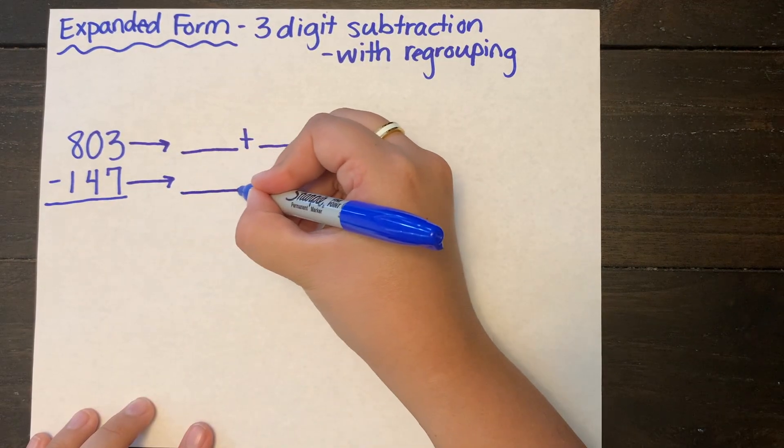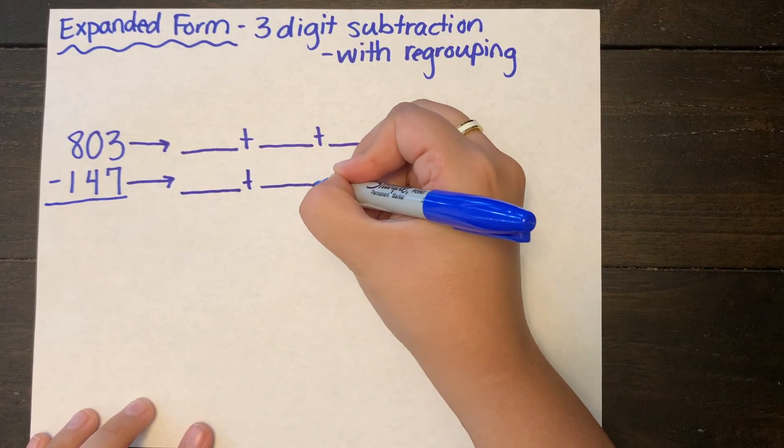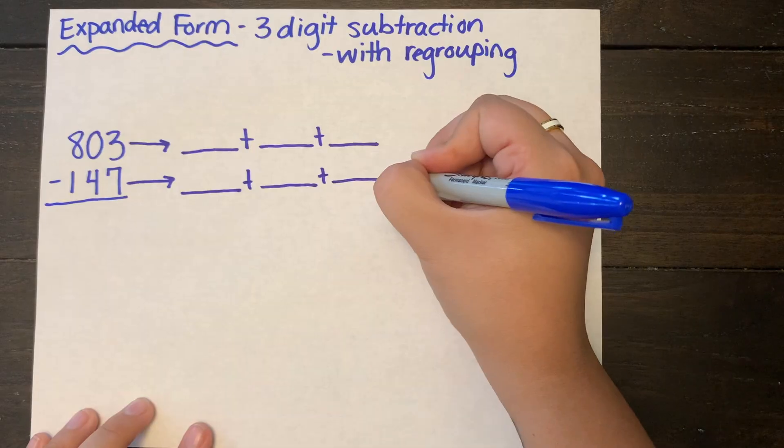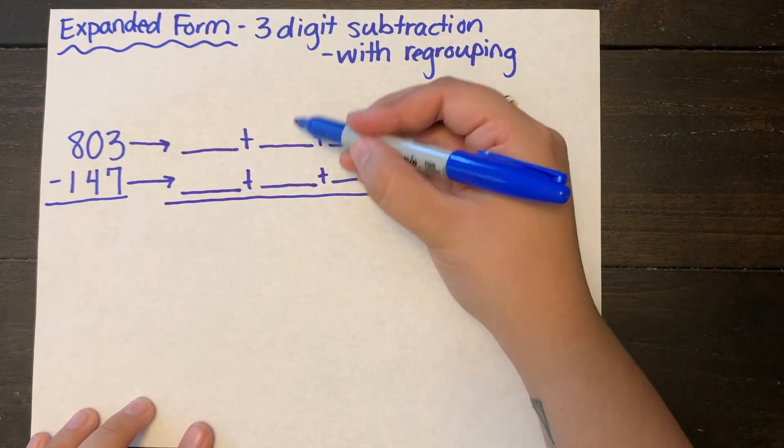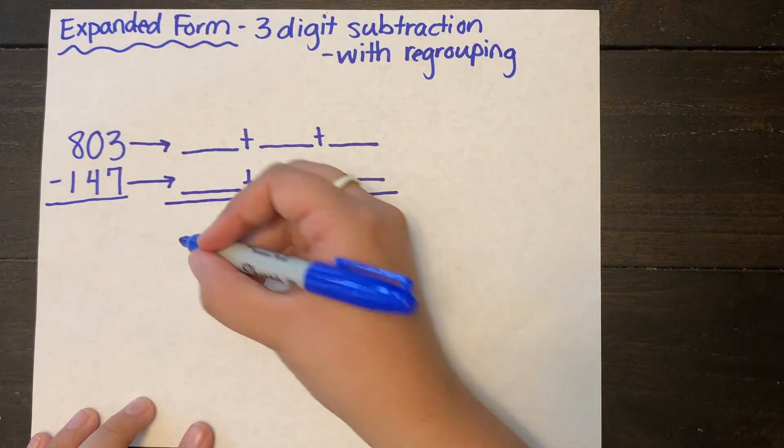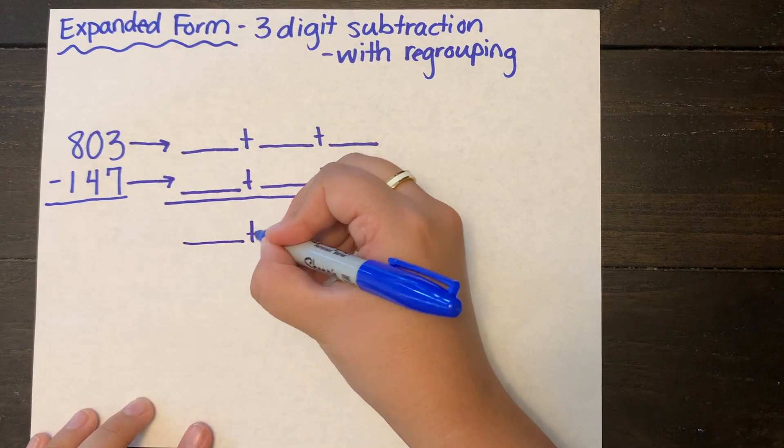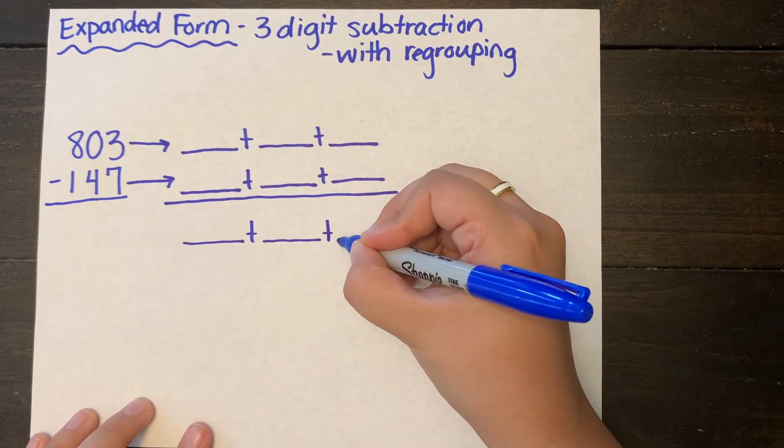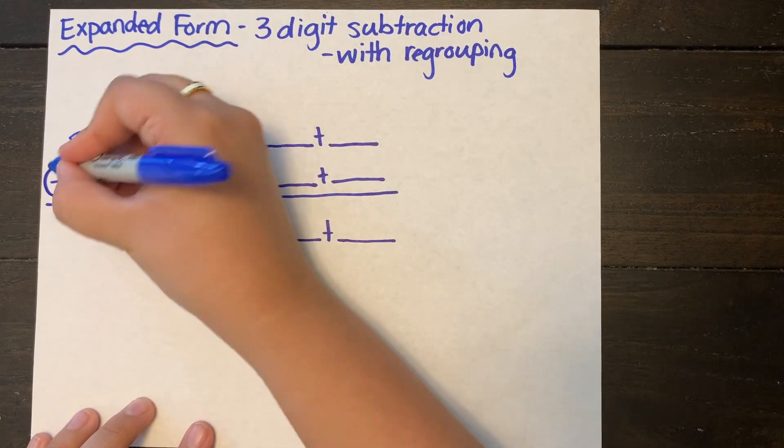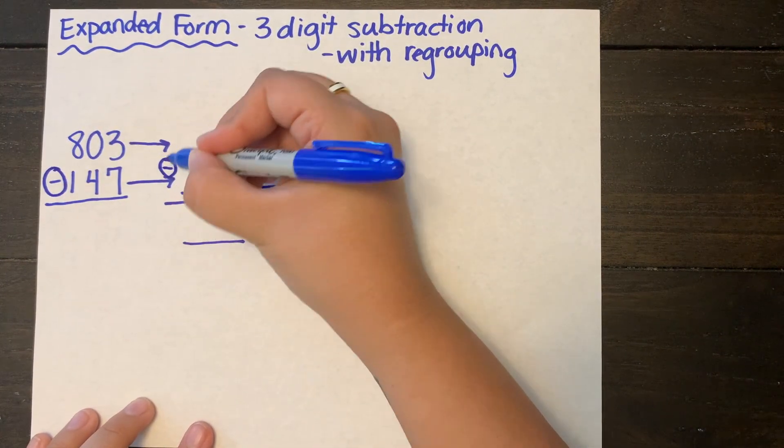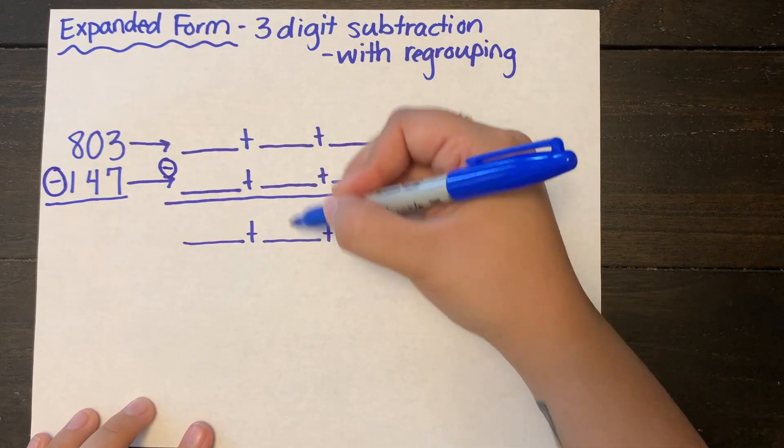And of course making sure I'm adding my addition symbols in between because you always use addition symbols when you're expanding out a number, even if you're subtracting those two numbers. I know it's confusing and I'm going to draw my subtraction symbol to constantly remind myself so I do not get confused.